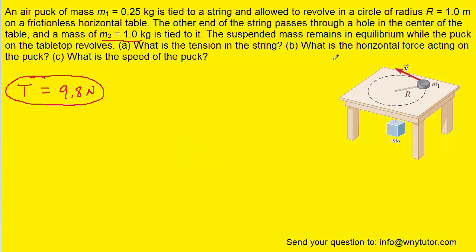Now for part B, to solve for the horizontal force acting on the puck, we can note that the horizontal force is the tension in the string. That is the force keeping the puck going around in a circular path. The tension in that string will be the same value we just calculated in part A, because it's the same rope.